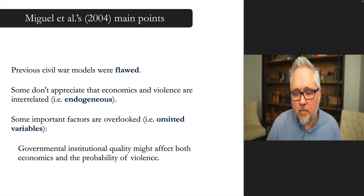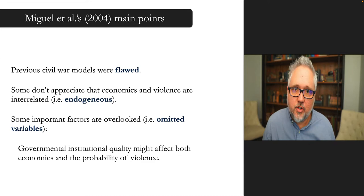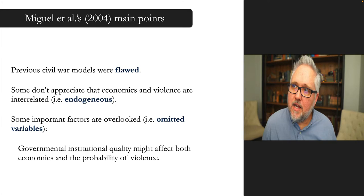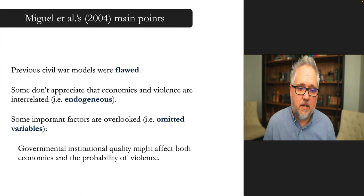Governmental institutional quality might affect both economics and the probability of violence as some exogenous force. Government is only really considered in Collier and Hoffler's article as a function of taxation — being able to get money out. But you actually need institutions that work to know where economic production is happening. That is something not really discussed; governments are assumed to be getting taxes from people in a frictionless manner, but that's a questionable assumption.